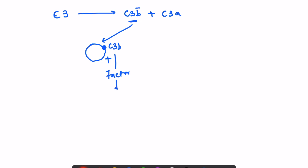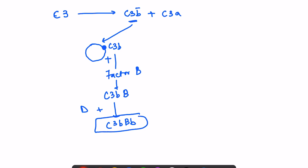Once C3B binds to the microbial surface, in the presence of Factor B and Factor D, it forms an activated complex which is essentially a C3-converting enzyme. This enzyme then further cleaves more C3 into its components, establishing a positive feedback loop.